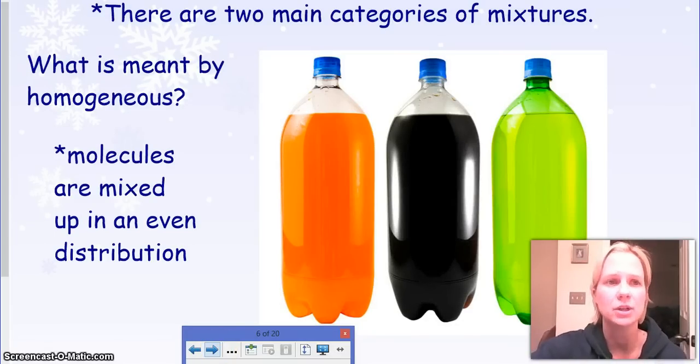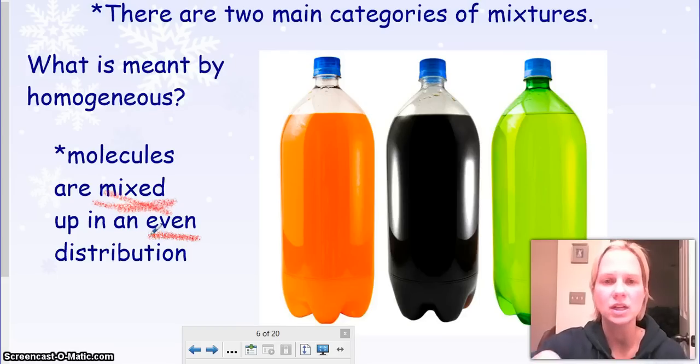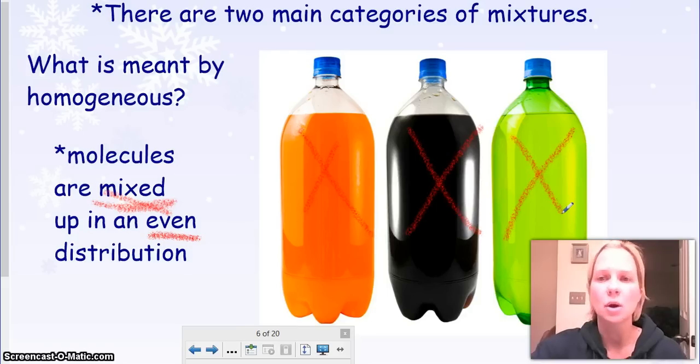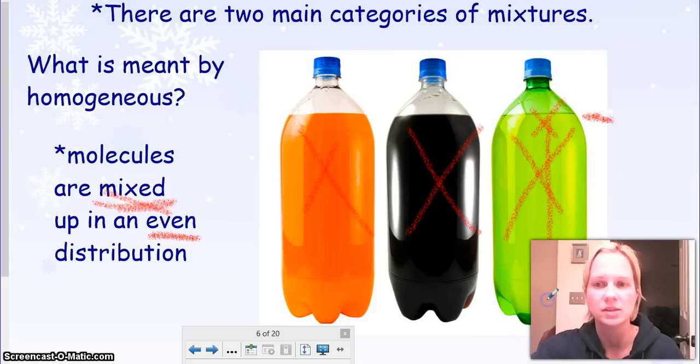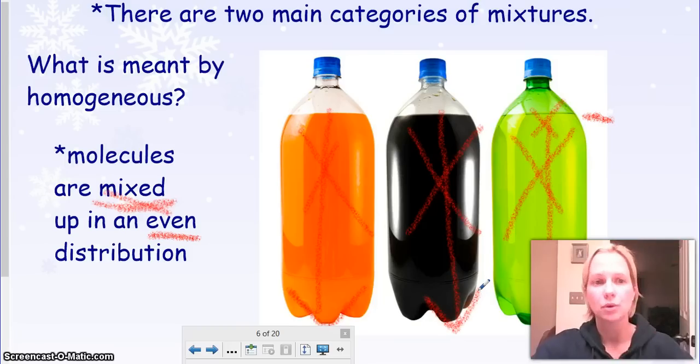There are two main categories of mixture, and the first one we're going to talk about is called homogeneous, which means the molecules are mixed in an even distribution. So we can see these three sodas, they're different colors but they're completely the same from top to bottom in each respective bottle. This Mountain Dew is going to have that lemony, limey flavor from the top all the way to the bottom with the same color and consistency. Same as the orange one, same as this Pepsi. It's going to be the same throughout, and that is a homogeneous mixture.